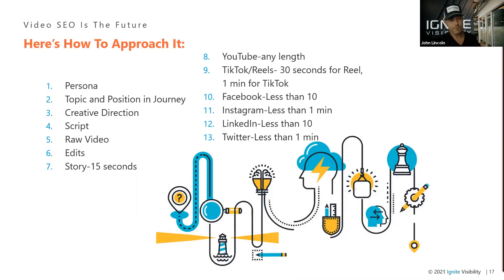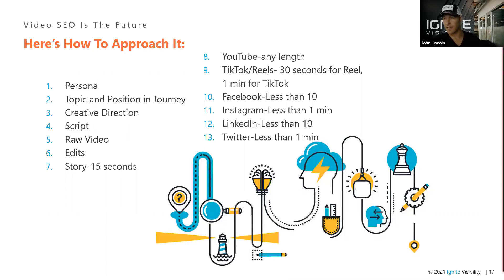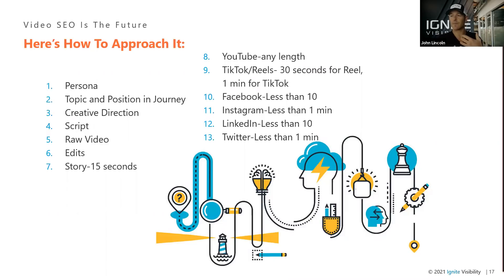Next, shoot the raw video, give it to an editor, and then the editor is going to kick back to you the following things: a story that's 15 seconds or less, or multiple stories so you can post them on all the different story sites; YouTube, usually somewhere in the five to 30 minute range; TikTok at one minute; Reels at 30 seconds; Facebook less than 10 minutes; Instagram less than a minute unless you're going IGTV; LinkedIn less than 10 minutes; and Twitter, technically two minutes but shorter tends to do better. Story selling really means lots and lots of stories continuing to stay in front of somebody.